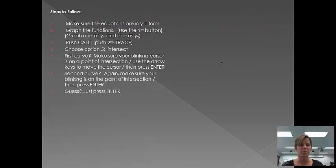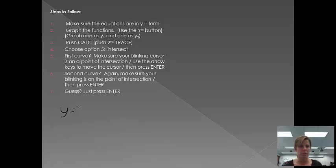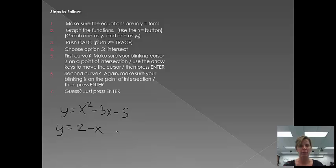There are seven steps that we're going to follow. I am going to use the example of the two graphs: y equals x squared minus 3x minus 5, and y equals 2 minus x. It's a parabola and a line. And I'm going to go through the steps on my graphing calculator.